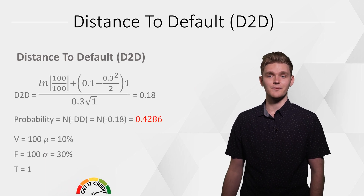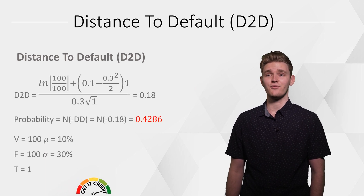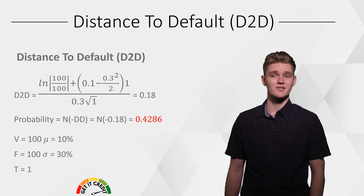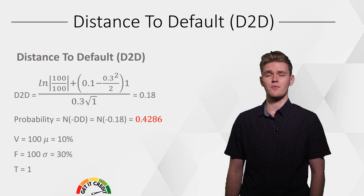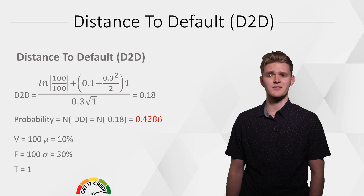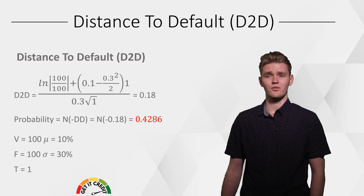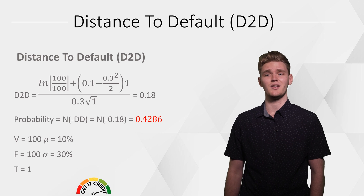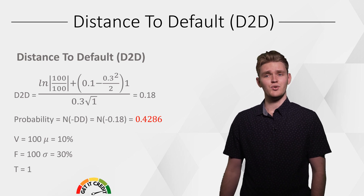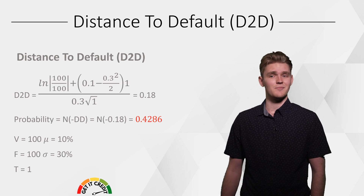However, when we increase our firm's face value of debt (F) to 100, we see that our firm is now presenting evidence of extreme risk of insolvency, with a D2D of 0.18 and a probability of default of 43%. This makes sense because in the hypothetical situation that we must pay off all our debt, we must use all of our assets, leaving nothing in reserves — which is extremely risky and will therefore increase our chance of default.